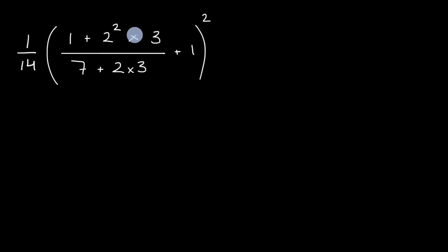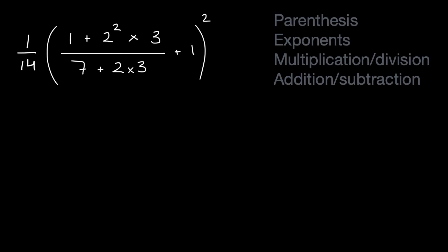We have exponents, we have multiplication, we have addition, we have division, we have parentheses. And so to interpret this properly, we just have to remind ourselves of the order of operations. So you start with parentheses, then go to exponents, then multiplication, division, then addition and subtraction.